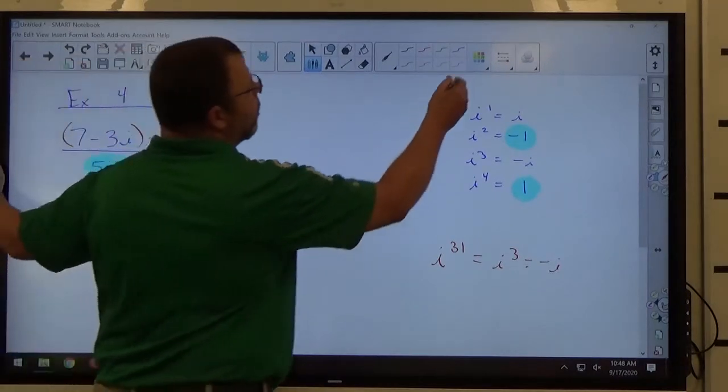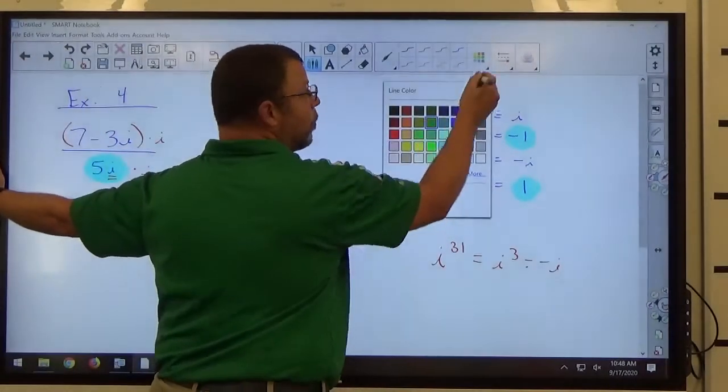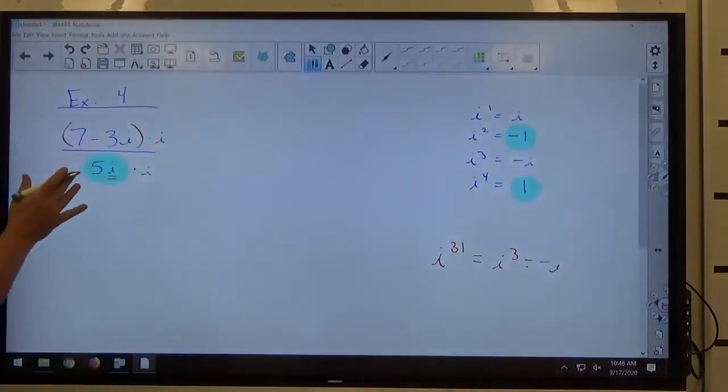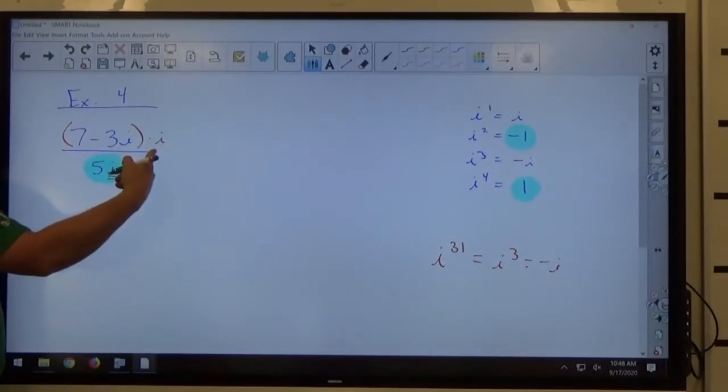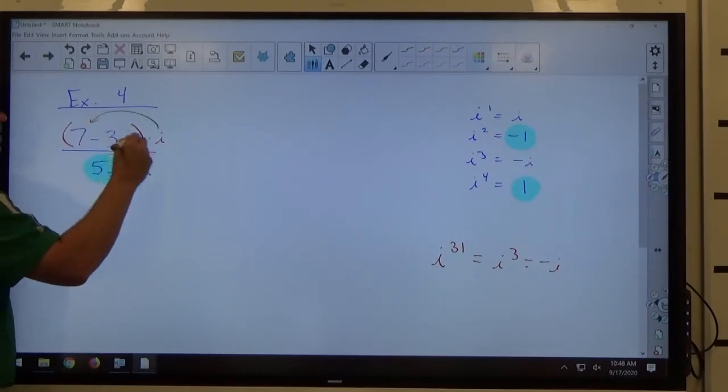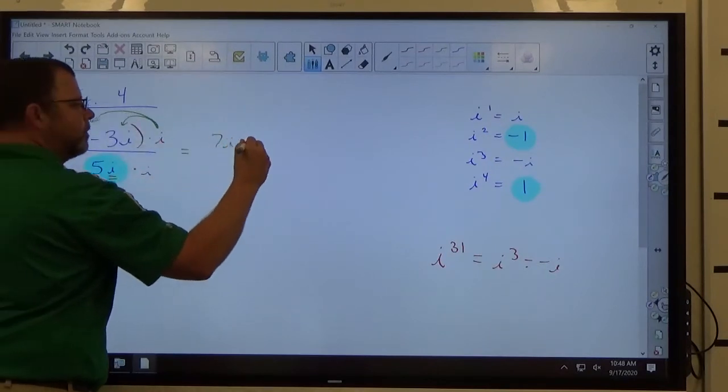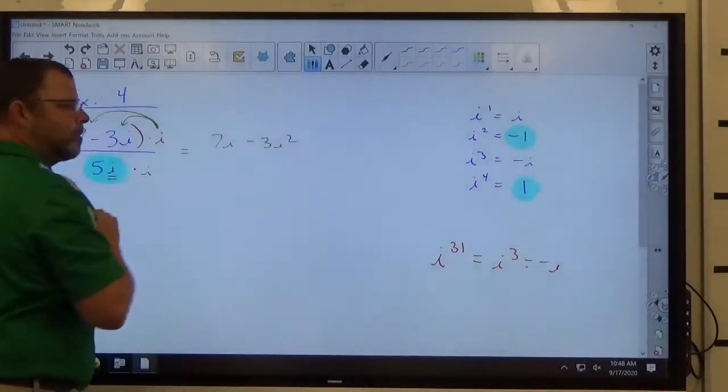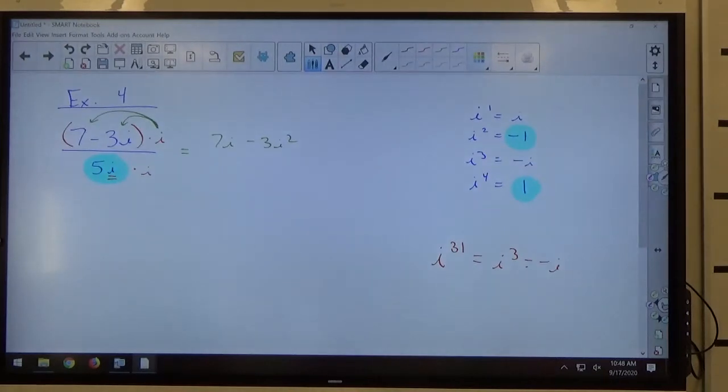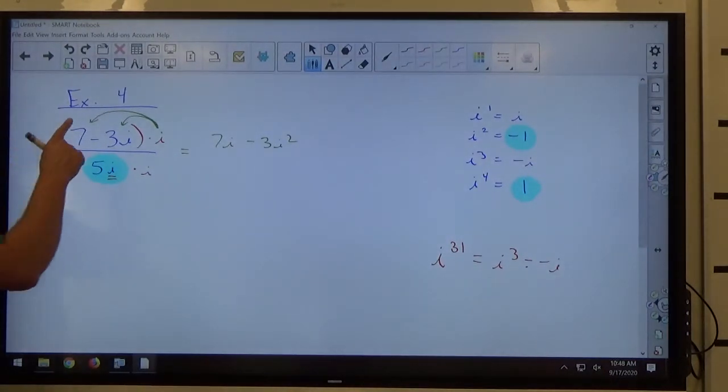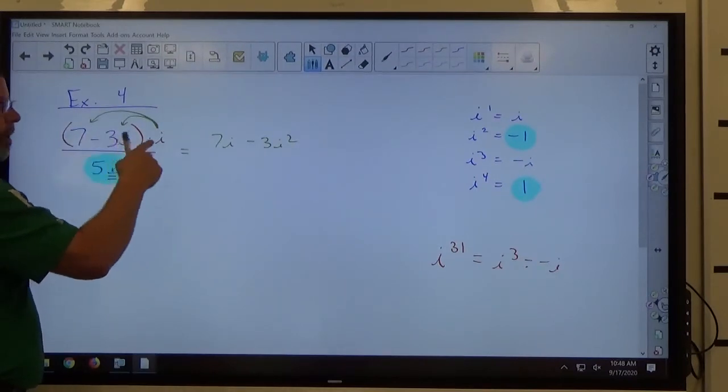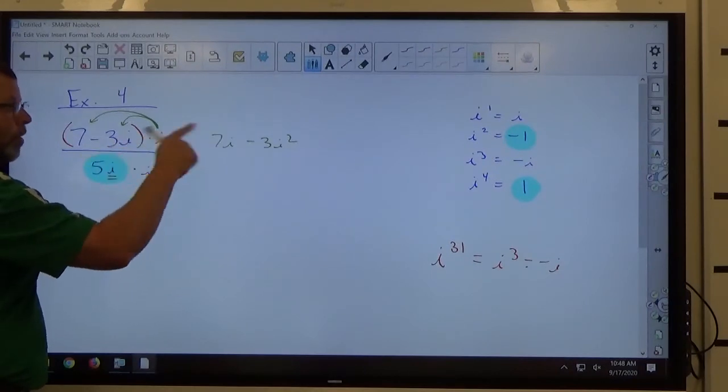Once I've done that step, I'm going to carry out the multiplication using whatever is necessary to do it. On the top, I've got a binomial structure times one thing, so I have to do the distributive property. So I'm going to multiply i times 7, and I'm going to multiply i times negative 3i. When you multiply a letter times a letter, you add the powers. i times i makes i squared on top for that 3.